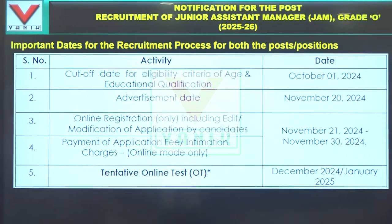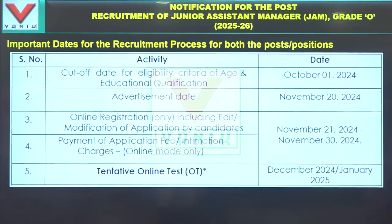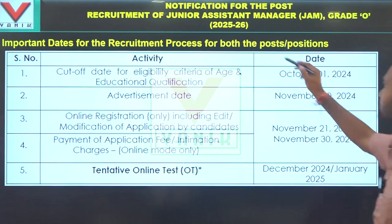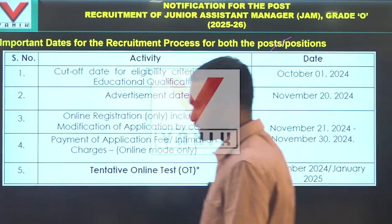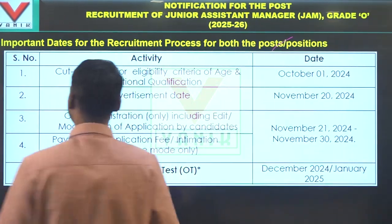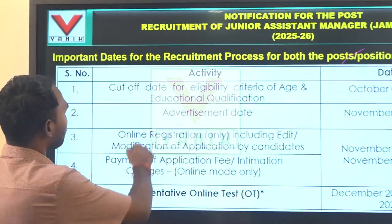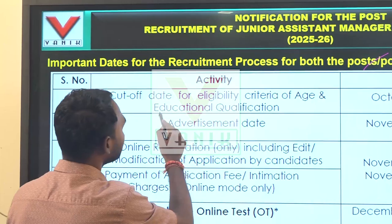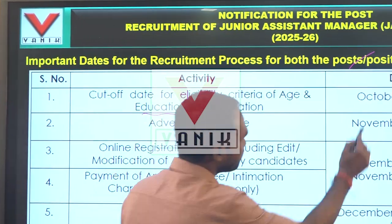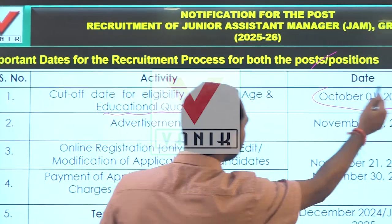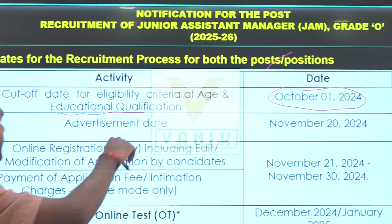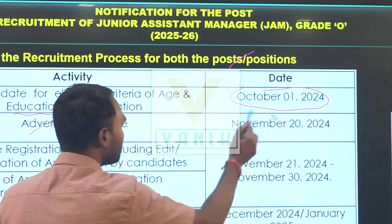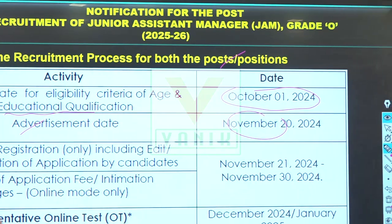Now, it is very important to note the important dates for both the generalist post and the specialist post. The cut-off date for eligibility criteria of age and educational qualification is October 1st, 2024. The advertisement date is November 4th.